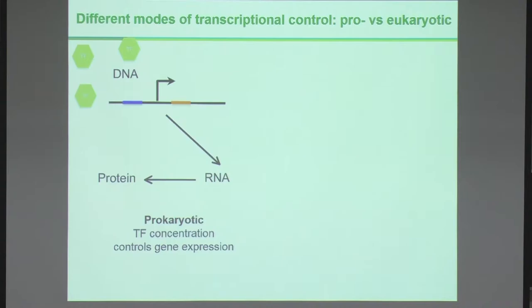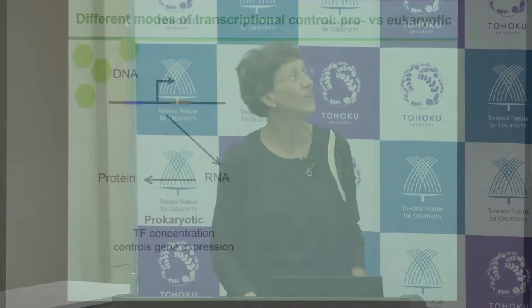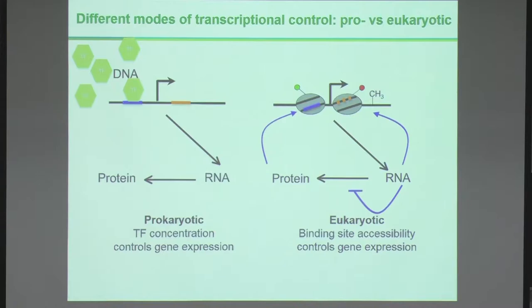This works because there is a fundamental difference between prokaryotic and eukaryotic gene expression. Prokaryotic gene expression is basically just a question of concentration of transcription factors — they bind their cognate site and activate transcription, making RNA and then protein. Eukaryotic cells are very different: transcription factor accessibility is the limiting factor for gene expression, not the abundance of transcription factors. The modification of nucleosomes is key to gene expression and restriction of gene expression.